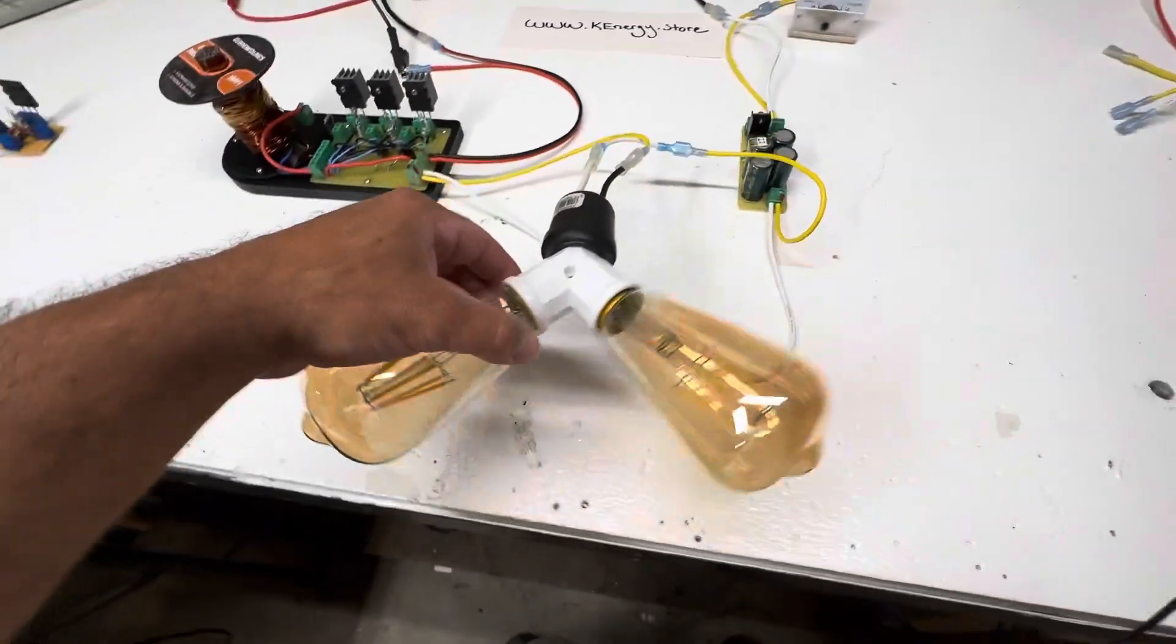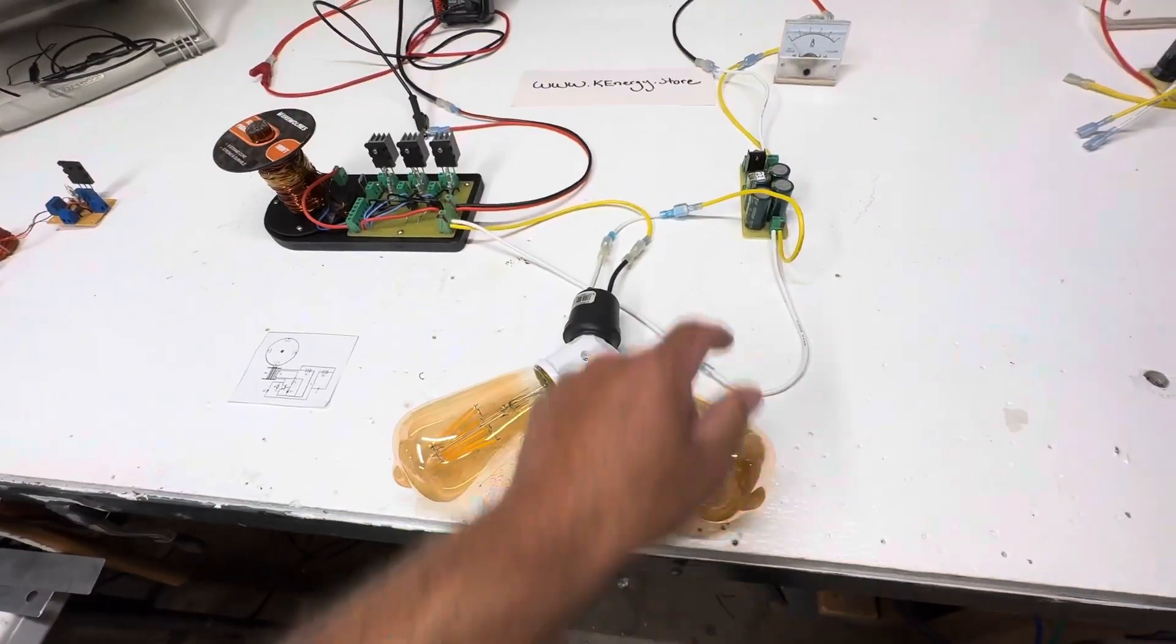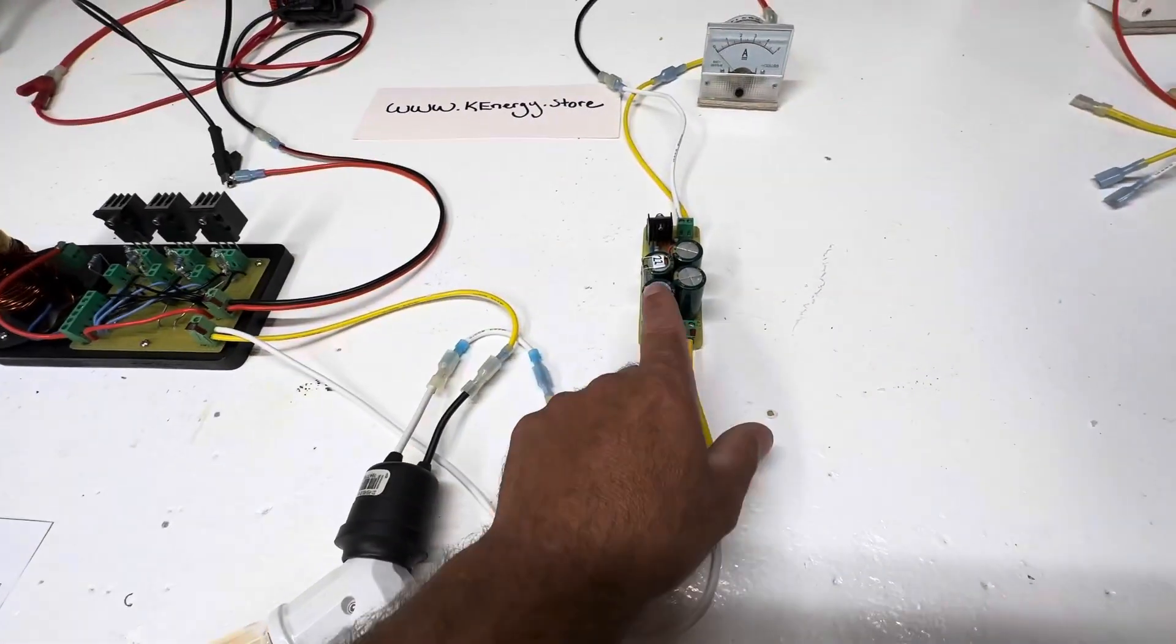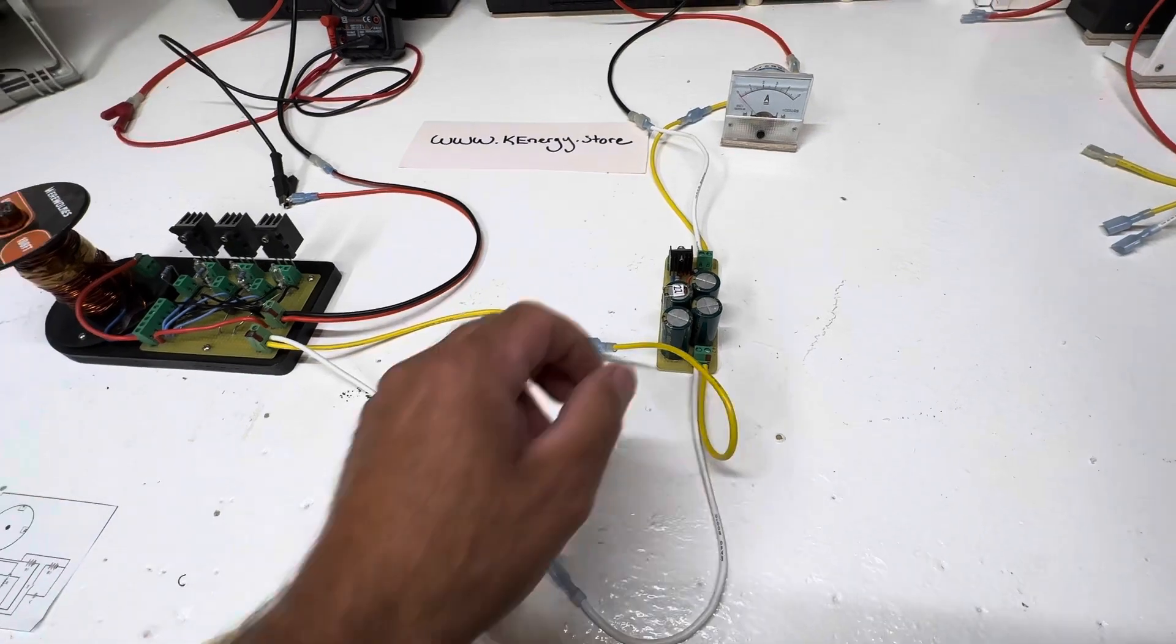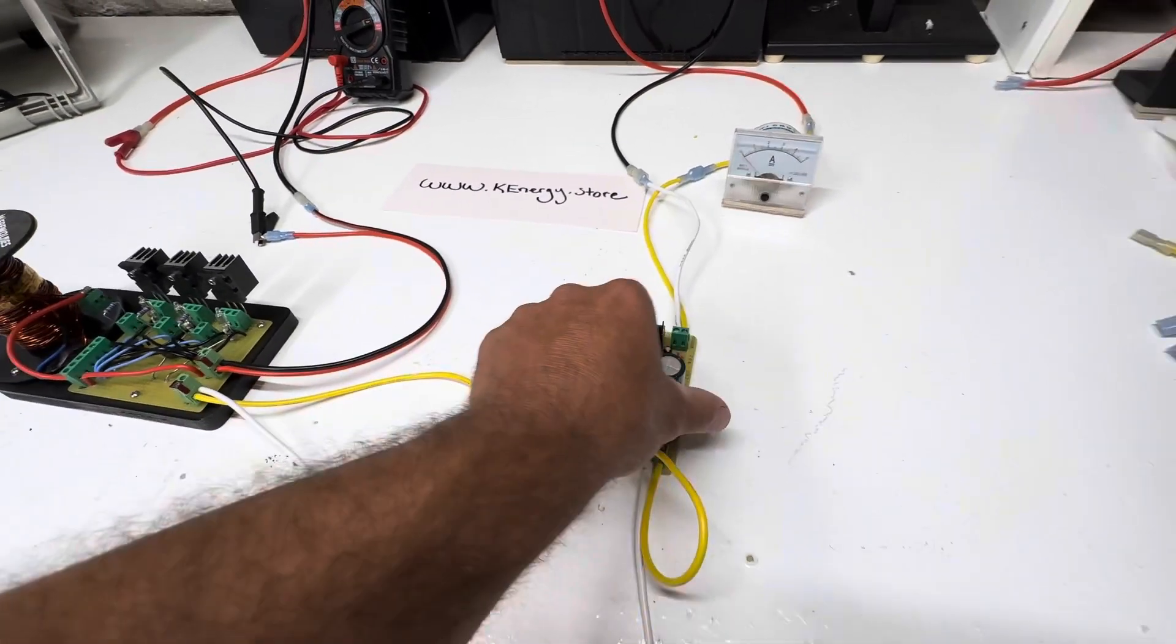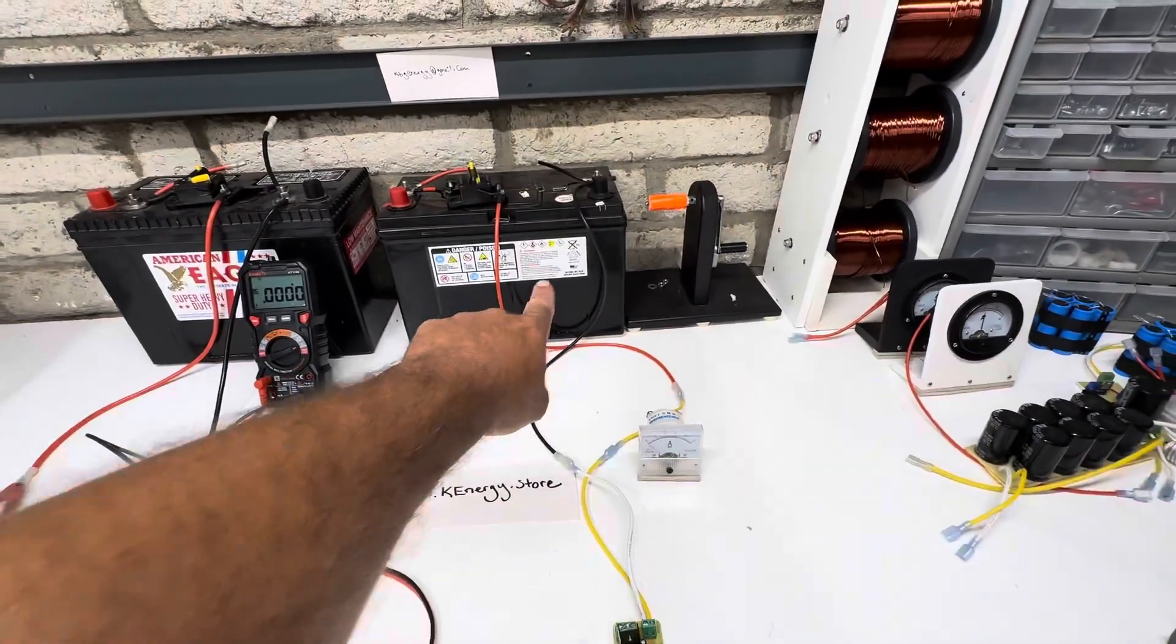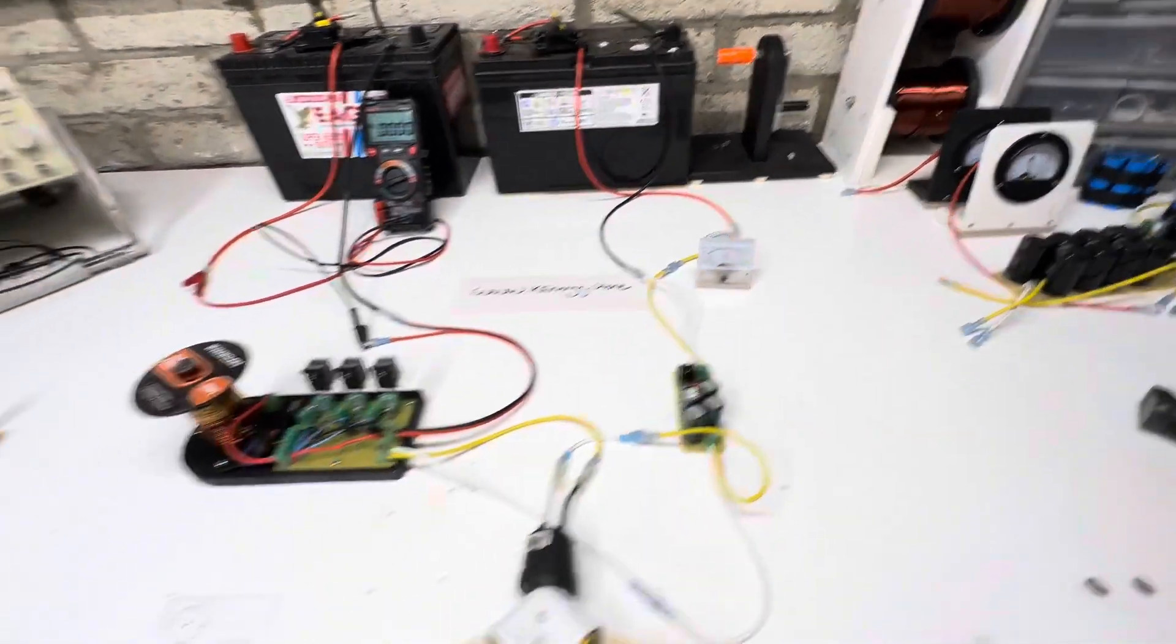So as this comes through, it goes in series through these light bulbs. These are 12 to 24 volt, 6 watt LEDs. And then it comes right in here to the cap dump. And the cap dump is set at 16 volts, so once it gets to 16 volts it's going to dump through the amp meter and then into the second battery.